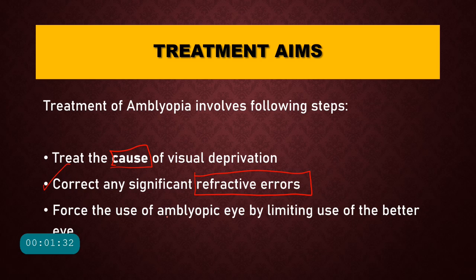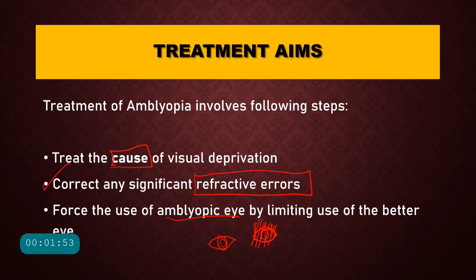In Amblyopia, the Amblyopic eye is called a lazy eye, and the normal eye compensates for the work the lazy eye is not doing. So in Amblyopia, we try to use the lazy eye more by limiting the use of the better eye.